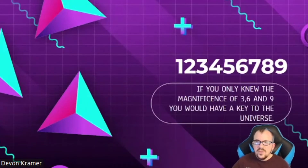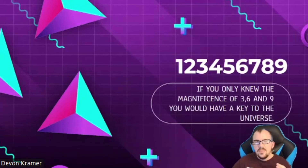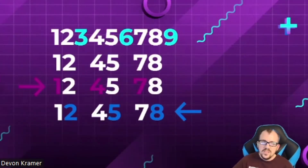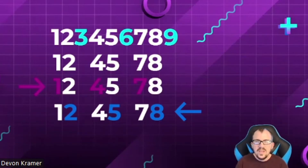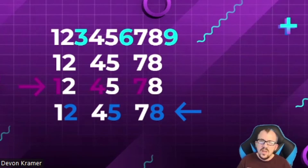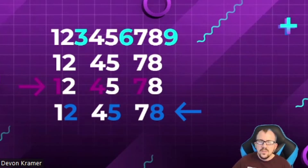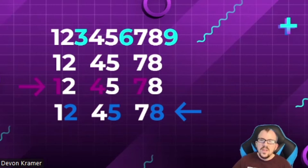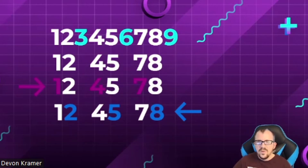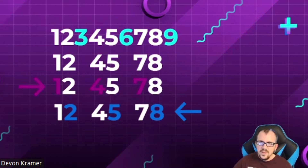Nikola Tesla said, 'If you only knew the magnificence of three, six, and nine, you would have a key to the universe.' I'm going to show you why he said that. If you take digital roots one through nine and remove the three, six, and nine, you are left with 1-2, 4-5, and 7-8. The first digits — one, four, and seven — sum to 12, and one plus two is three. The last digits going counterclockwise — eight, five, and two — sum to 15, and one plus five is six. Three, six, and nine together still give you three, six, and nine, because three plus six is nine.